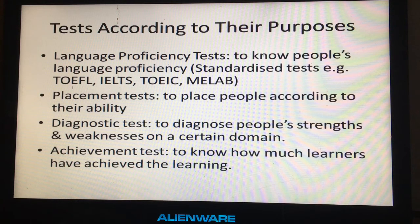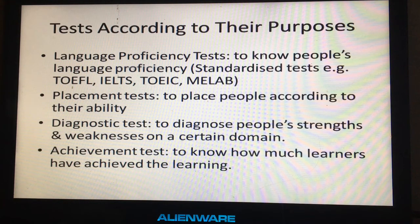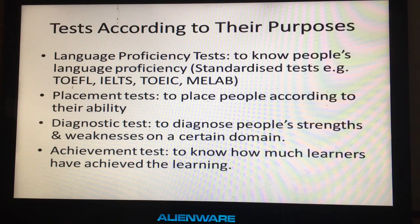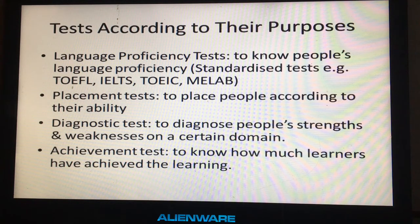According to their purposes, there are four types of tests. The first is the language proficiency test — it measures people's language ability in a certain language. Examples are IELTS, TOEFL, and MELAB, which stands for Michigan English Language Assessment Battery. The second is the placement test — it places people according to their ability, interests, and so on, so we can place them accordingly.